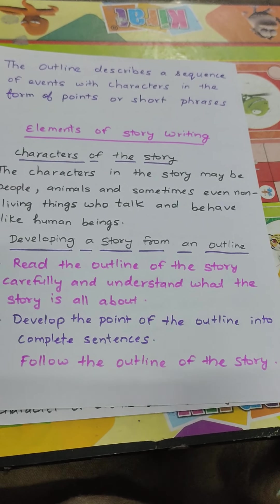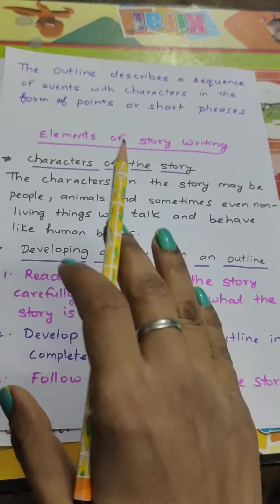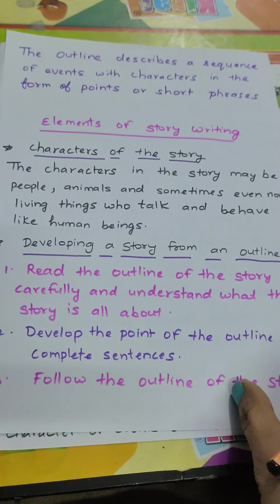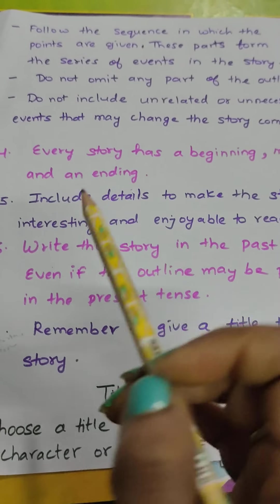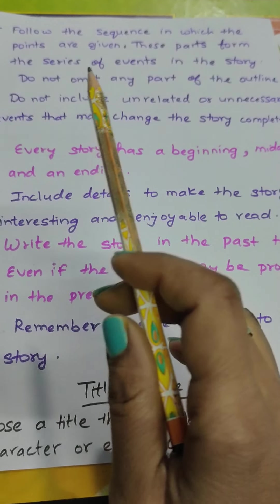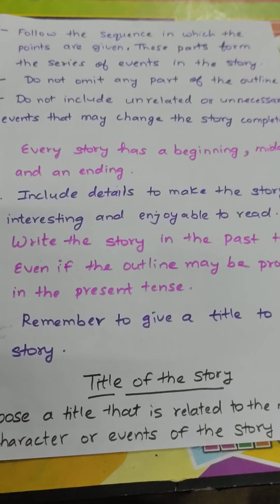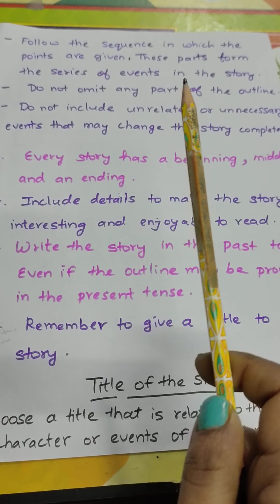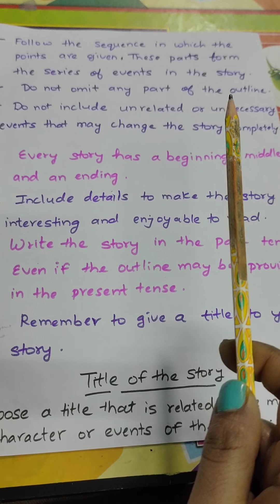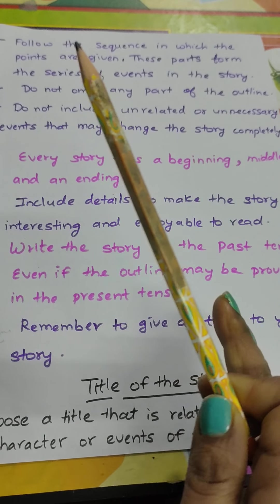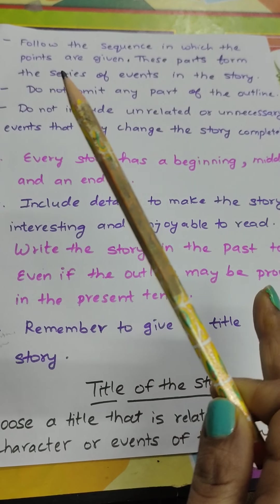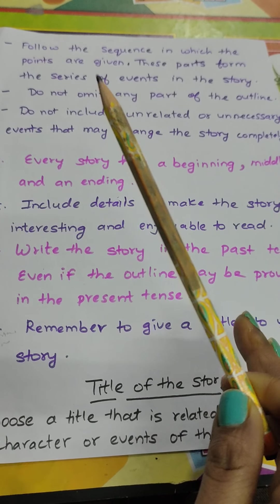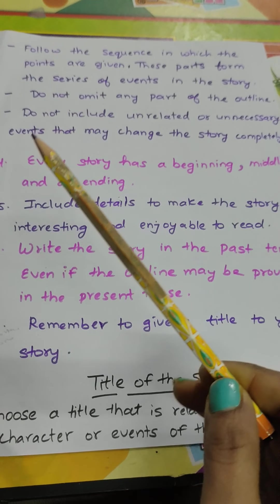Third: follow the outline of the story. When writing the story, if an outline is given, follow those outline points to complete the story. Fourth: follow the sequence in which the points are given. Whatever points are given in the outline, follow them in sequence — these points form the series of events in the story, and that sequence will help you complete the story.